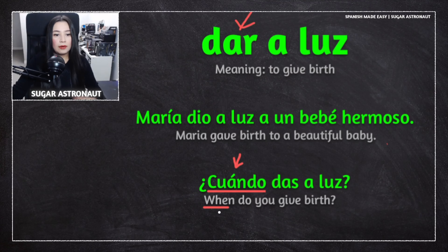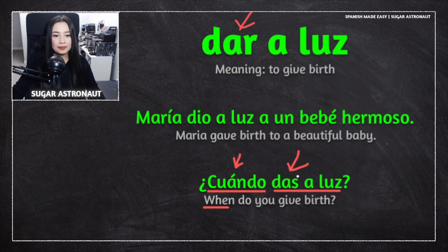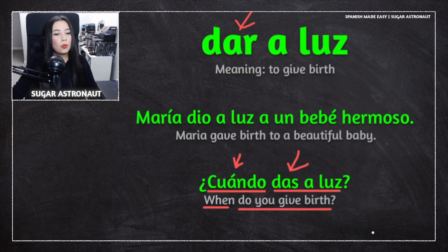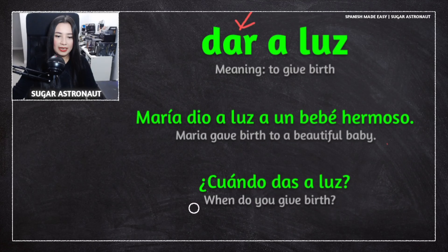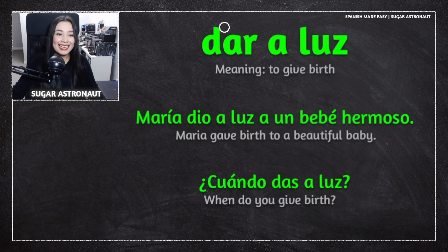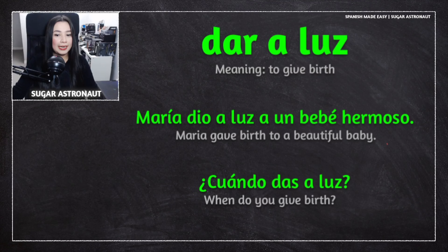¿Cuándo? — you need the accent mark. ¿Cuándo das a luz? This is the verb dar, and a luz is the rest of the phrase. 'Do you give birth?' — ¿Cuándo das a luz? — When do you give birth? So this is another great use of the verb dar. Remember: dar a luz. We're not talking about light; we're talking about giving birth. That is a common term, a common phrase in Spanish.